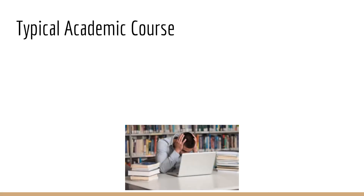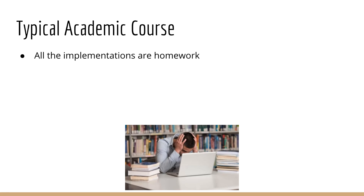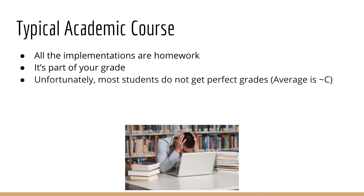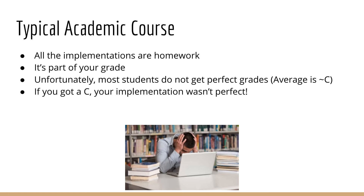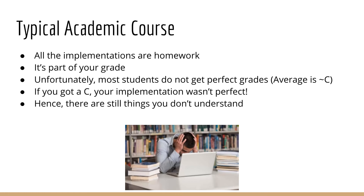Another downside of college courses is that all of the implementations are homework, so you have to implement everything by yourself as part of your grade. Unfortunately, most students do not get perfect grades — the average grade is about a C. The problem is that if you're getting a C, then your implementation was imperfect. And if your implementation wasn't perfect, then there are still some things you do not understand.